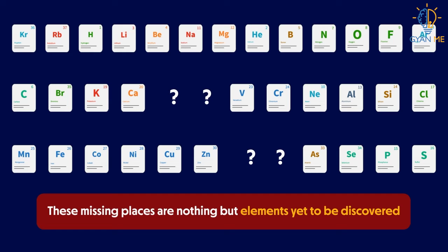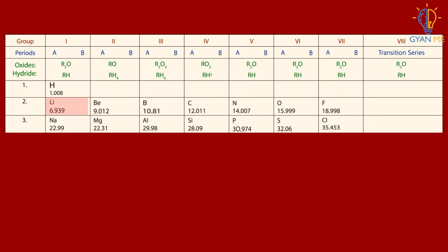Mendeleev noted that if the elements were arranged in ascending order of their atomic masses, the chemical and the physical properties of the elements would repeat after the interval of certain elements. He called his discovery the periodic table of elements.